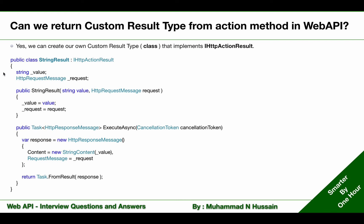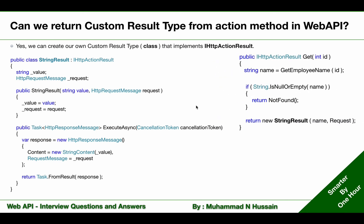Now that we have created a custom result type, StringResult, we can use this in the controller and return it from the action method. Just have a look at the right-hand side example. Here is the method GetIntController, and that method is returning IHttpActionResult. In the case when name is not null or empty, I am using that custom result type and returning it from the action method in this way.